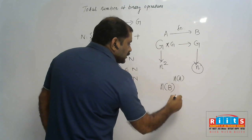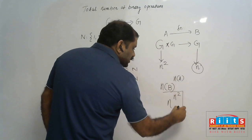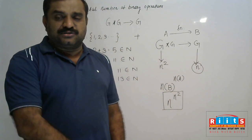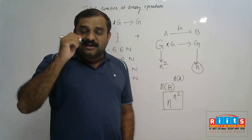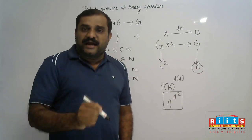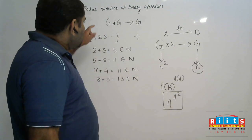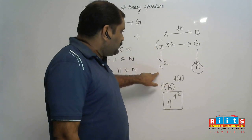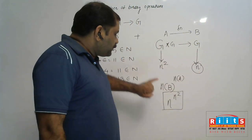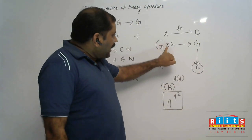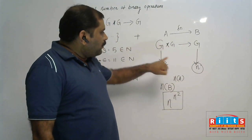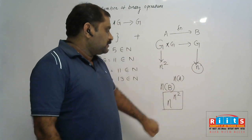So the total number of different binary operations defined on a set — where G contains n elements, G star G contains n squared elements — is n raised to n squared. That is the shortcut formula: total number of binary operations defined on a set equals n raise to n squared, where n is the number of elements in the set.